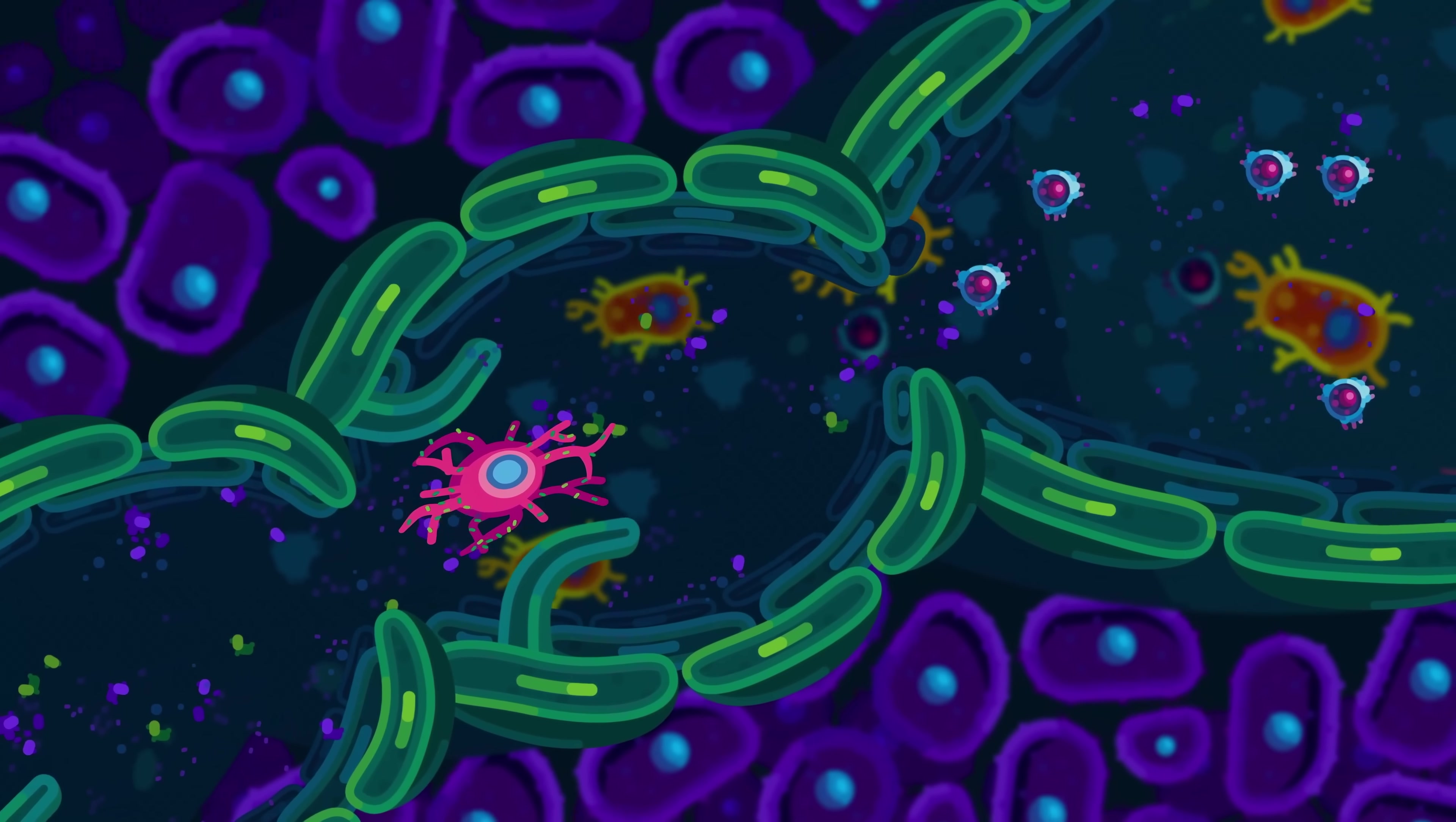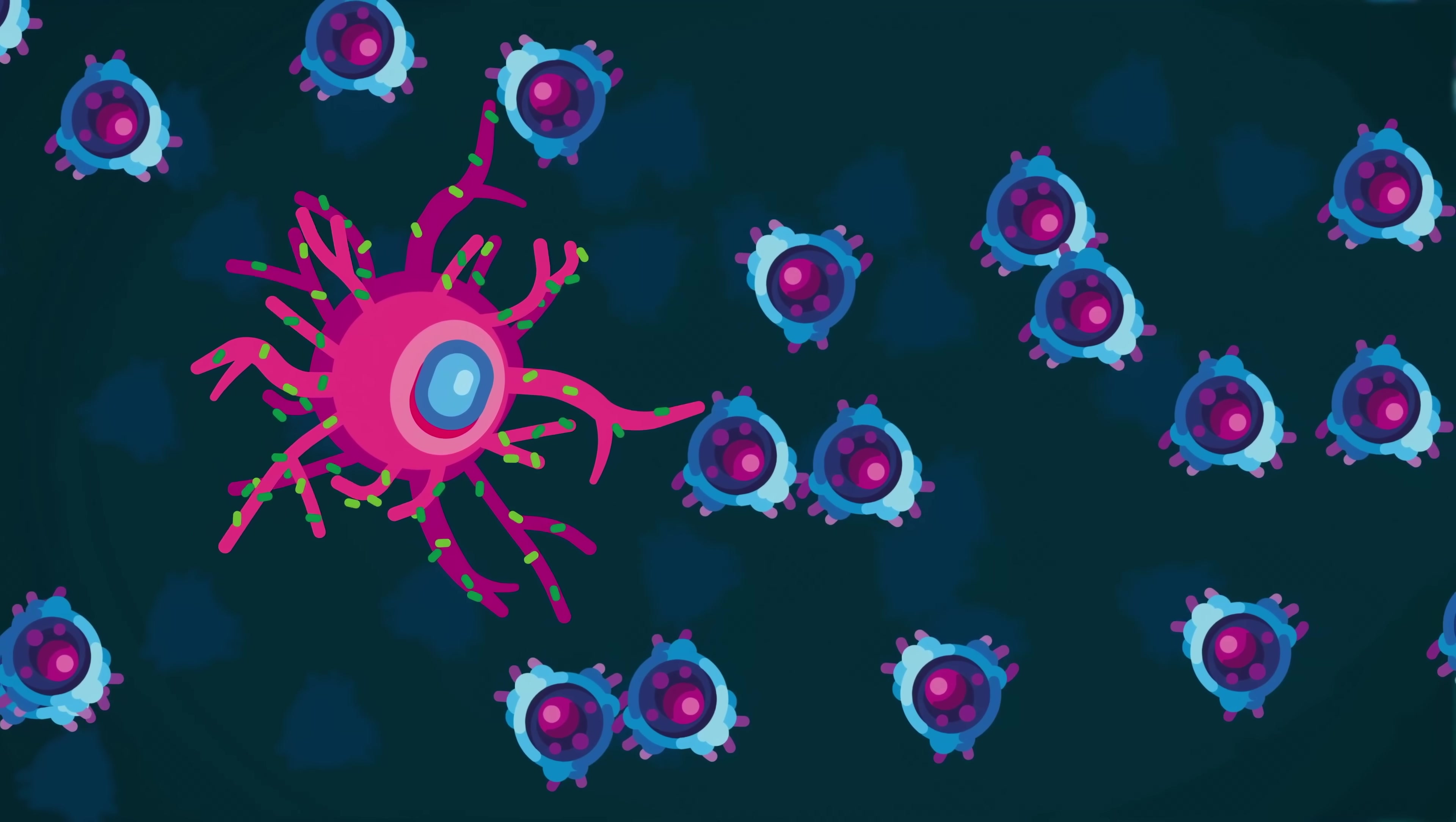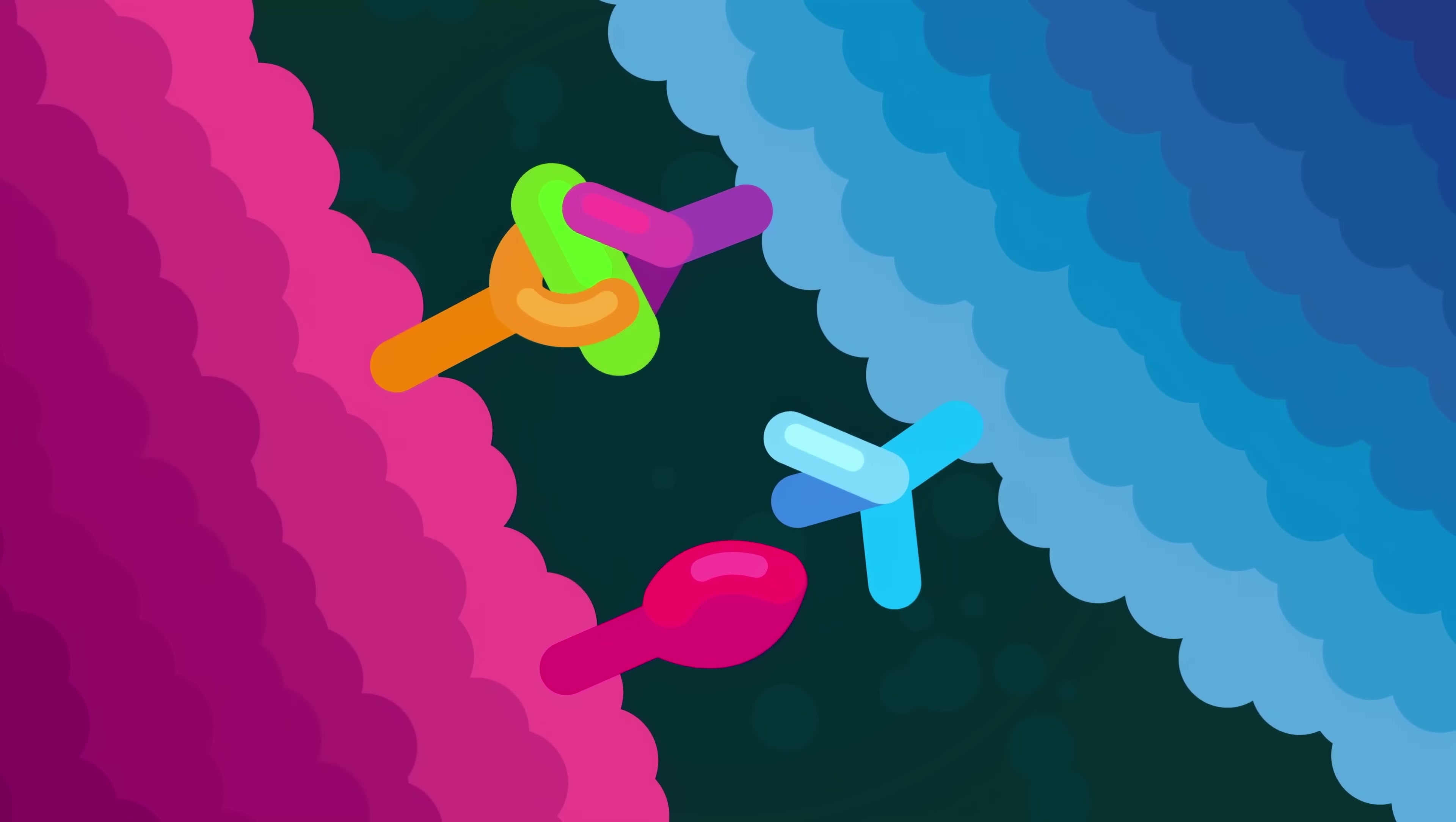The dendritic cell coming from the battlefield is looking for a helper T cell, which is a sort of all-purpose commander cell within your immune army. But not any helper T cell. One that happens to have just the right weapon for the bacteria that infected your wound. So it goes around and rubs itself, still covered in bacteria parts, against every helper T cell it meets. Most T cells are a bit disgusted and not interested. But after a few hours, something clicks. A helper T cell recognizes the bacteria parts. This cell is the weapon that's needed right now. The dendritic cell is overjoyed and activates the helper T cell.